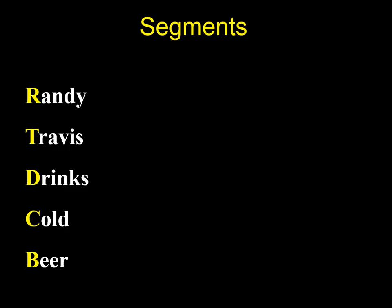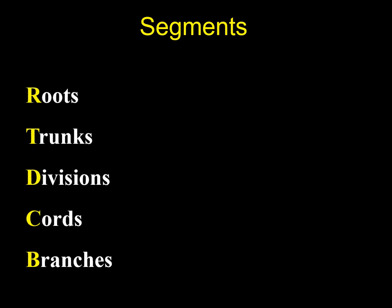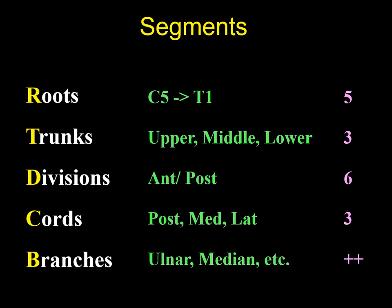When I was a medical student we used the mnemonic 'Randy Travis Drinks Cold Beer' to remember the segments of the brachial plexus — or maybe you prefer 'Radiology Technologists Drink Cold Beer.' In any case, it stands for Roots, Trunks, Divisions, Cords, and Branches. There are five cervical nerve roots — C5, C6, C7, C8, and T1 — that contribute to the brachial plexus, with minor contributions from C4 and T2.